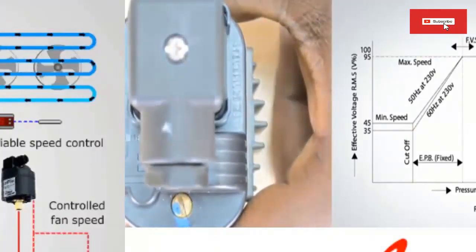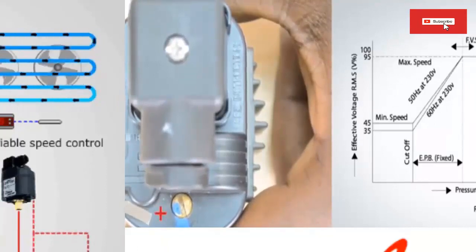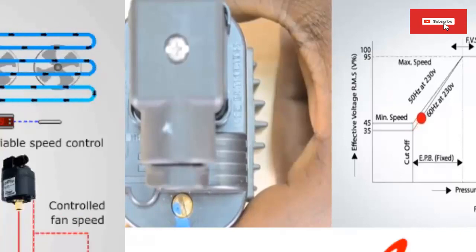5. On cold days, the VSC control decreases the fan speed, which allows to maintain the minimum condenser pressure to achieve refrigerant condensate.